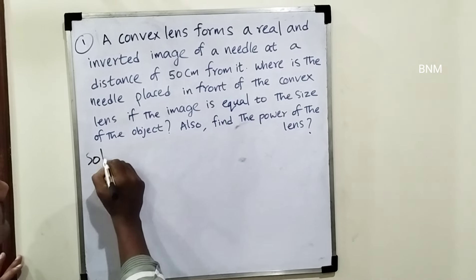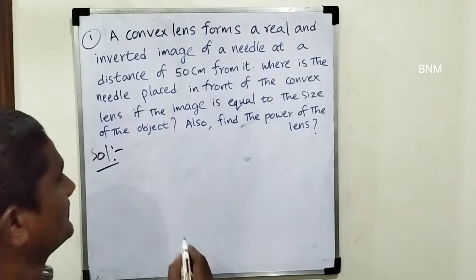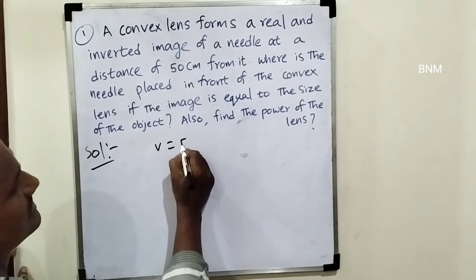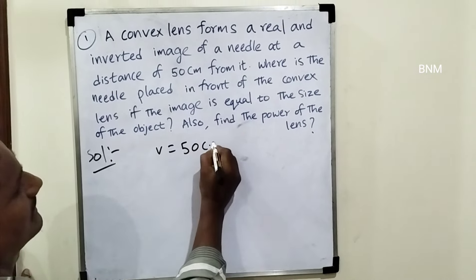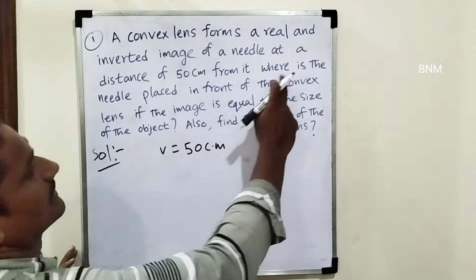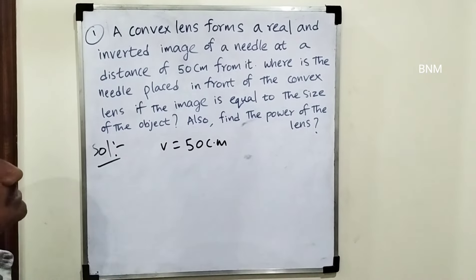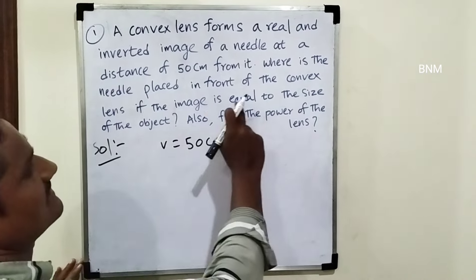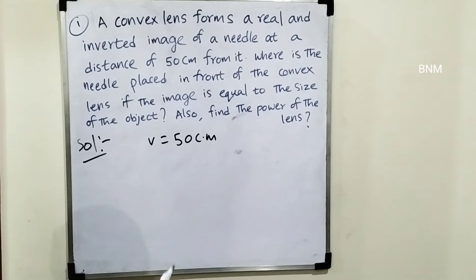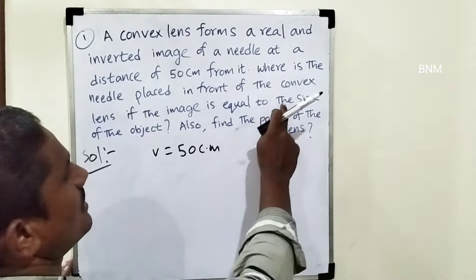Given that: we have the image distance. V is equal to 50 cm. Now, if the object is placed such that we have the equal size of the image — equal size of the image.